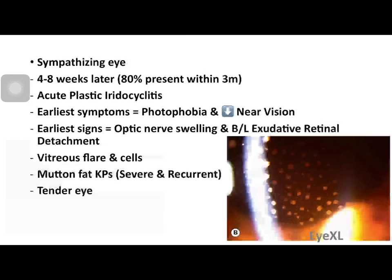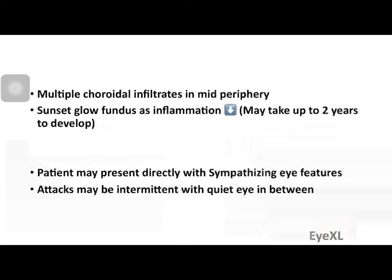The earliest signs are optic nerve swelling and bilateral exudative retinal detachment, which are difficult to see due to the severe anterior segment inflammation. Vitreous flare and cells are present because the choroidal inflammation extends into the vitreous. Mutton-fat keratic precipitates are seen — these indicate either a very severe or recurrent infection, as they take time or need very severe inflammation to develop. The eye is tender, and multiple choroidal infiltrates appear as white fluffy dots in the mid-periphery of the retina.